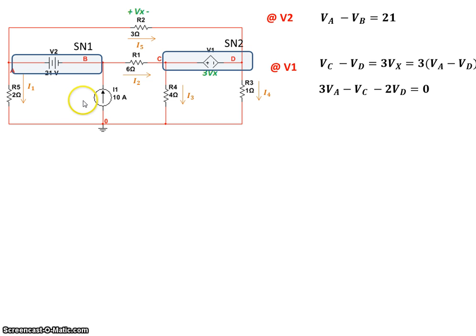So supernode basically means, in this case, we use KCL. And all the currents going into a supernode should be equal to the current coming out of the supernode. For instance, supernode 1. So let's apply KCL at supernode 1.